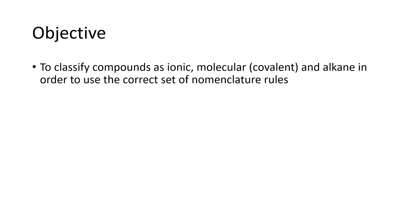Our very first objective for nomenclature is to classify the compounds that we're working with as either ionic, molecular, also known as covalent, or alkane. We first have to classify it to make sure that we're applying the correct set of rules for either naming it or writing its formula.